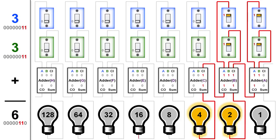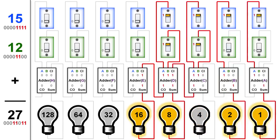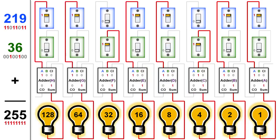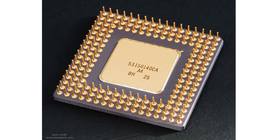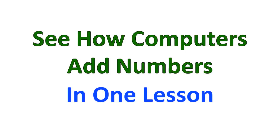Let's look at a few more examples for you to consider on your own. We won't talk through these, but feel free to pause the video and take a longer look if you'd like. Here is 10 plus 10. Now let's look at 15 plus 12. And finally, 219 plus 36, which adds up to the maximum of our lightbulbs: 255. Now this kind of thing happens millions of times a second inside of the microprocessor that fits on the motherboard inside of your computer. So now you've seen how computers add numbers in one lesson.